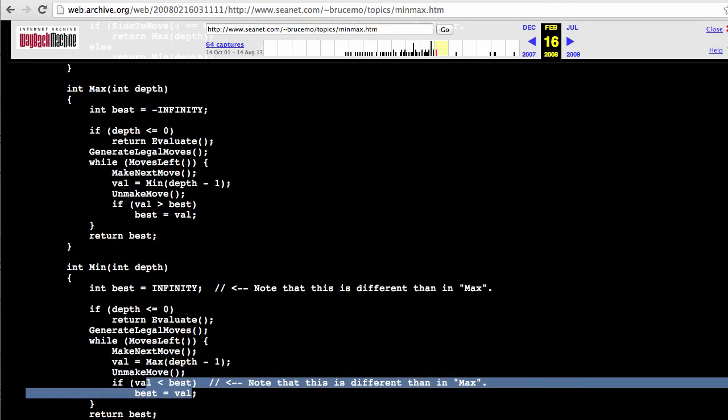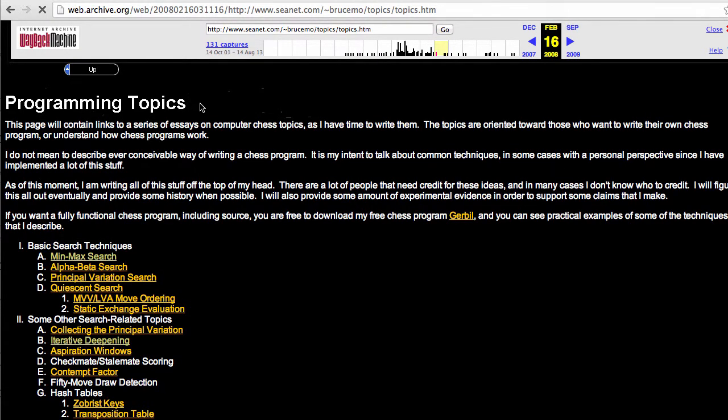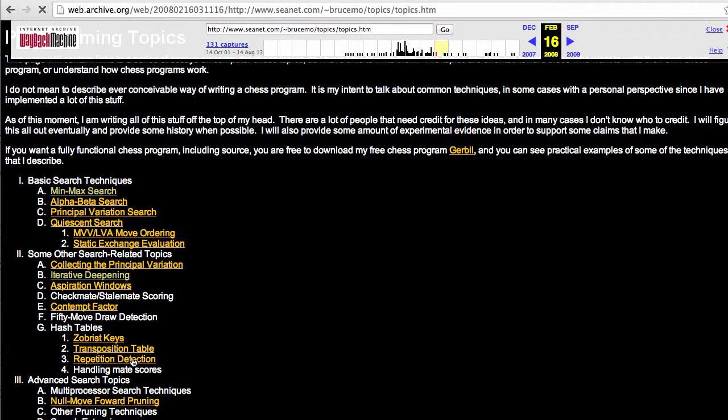An excellent reference to read through is a link I'll be posting on the description for this video and it's some programming topics for chess by a guy called Bruce Moreland who made an excellent engine called Ferret, a commercial, and also a long time ago made an open source engine called Gerbil which is a really efficiently written open source program. And he's described, as you can see here in the menu,